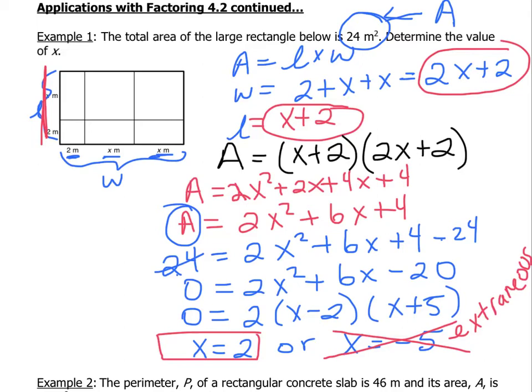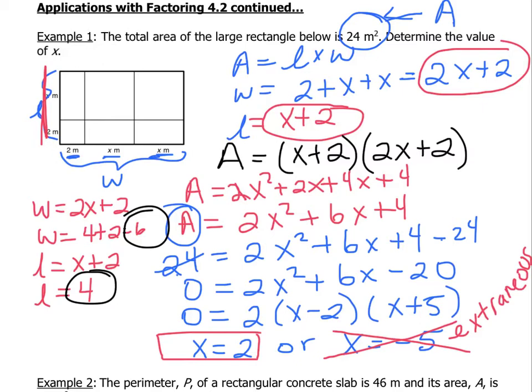Now if I take that, my width is 2x plus 2. Plug in the value of 2. So w equals 4 plus 2, which is going to be 6. And for your length, plug in the value of 2 in our x plus 2. That's going to give us a length of 4. So now we have that our width is 6 and our length is 4. So the dimensions of our rectangle is 4 by 6. And 4 times 6 is equal to 24. So we know that this part here is satisfied.